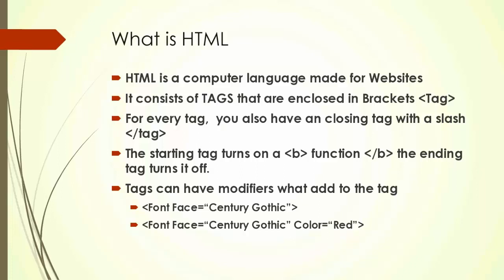The tags themselves can have different kinds of things. As long as they're within the brackets, those things called attributes will modify whatever the tag is and basically help add information. So you have the font tag, which tells the computer what font to use. Typically, the code that goes with it is face. So you have font face equals Century Gothic, and the name is in quote marks — that's how the computer reads what it's supposed to do.